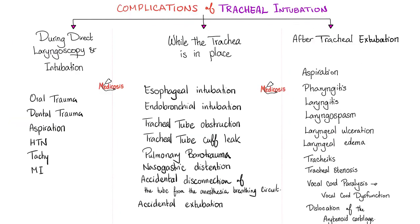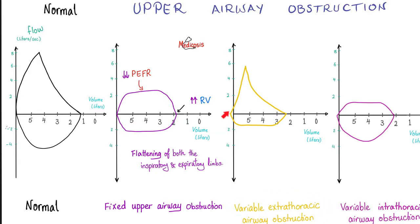Complications of tracheal intubation: during intubation — oral trauma, dental trauma, aspiration, hypertension, tachycardia, myocardial infarction. While the tube is in place — esophageal intubation, endobronchial intubation, tracheal tube obstruction, tracheal tube cuff leak, pulmonary barotrauma, nasogastric distension, accidental disconnection between tube and breathing circuit, accidental extubation. After extubation — aspiration, pharyngitis, laryngitis, laryngospasm, laryngeal ulceration, laryngeal edema, tracheitis, tracheal stenosis, vocal cord dysfunction — which gives a characteristic shape on flow volume loops — and dislocation of the arytenoid cartilage.